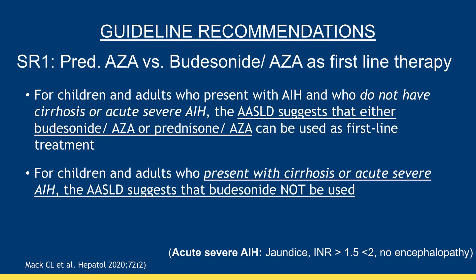Secondly, for children and adults who present with cirrhosis or acute severe autoimmune hepatitis, the AASLD suggests that budesonide not be used. The reason for this is that patients who have cirrhosis have increased portosystemic shunting and decreased budesonide drug bioavailability, and the use of budesonide to treat acute severe autoimmune hepatitis is completely unknown and therefore not recommended.